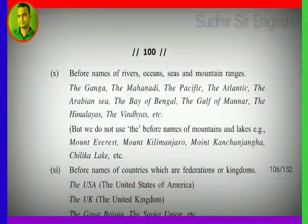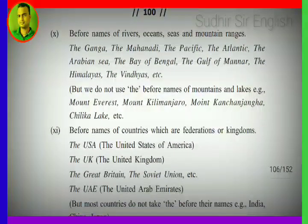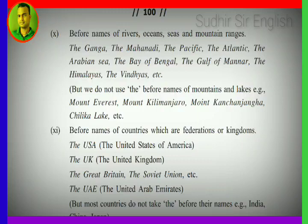Next: before names of rivers, oceans, seas, and mountain ranges, we use 'the'. Examples: the Ganga, the Mahanadi, the Pacific, the Atlantic, the Arabian Sea, the Bay of Bengal, the Gulf of Mannar, the Himalayas, the Vindhyas. But we do not use 'the' before names of individual mountains and lakes — for example: Mount Everest, Mount Kilimanjaro, Mount Kanchenjunga, Chilika Lake.